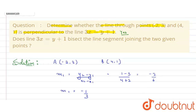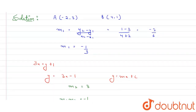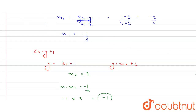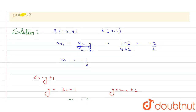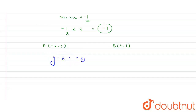Now for the second part: does the line 3x = y + 1 bisect the line segment joining these two points? To check this, we first need to find the equation of the line through points (-2, 3) and (4, 1). Using y - y1 = m(x - x1), with slope -1/3 and point (-2, 3): y - 3 = -1/3 × (x + 2).